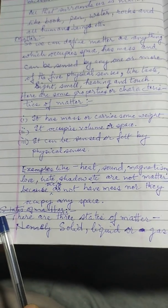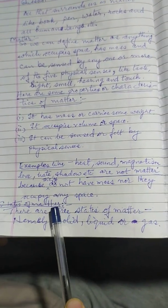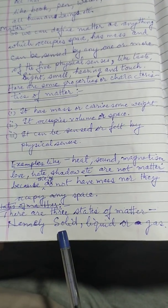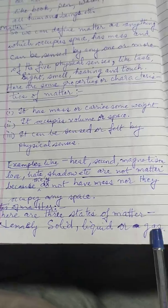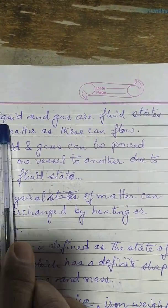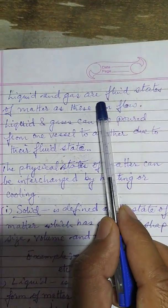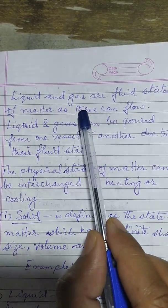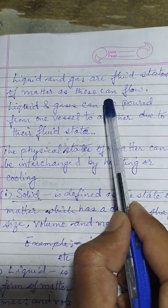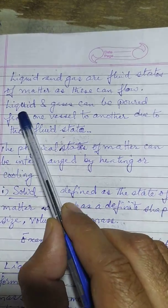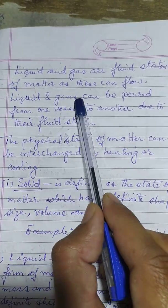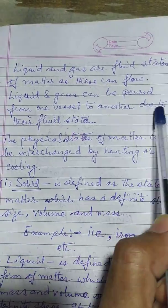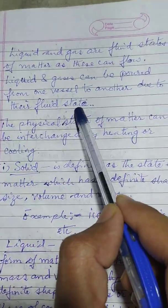Let us come to the states of matter. There are three states of matter, namely solid, liquid, or gas. Liquid and gas are fluid states of matter, as these can flow in a certain direction. Liquids and gases can be poured from one vessel to another due to their fluid state.